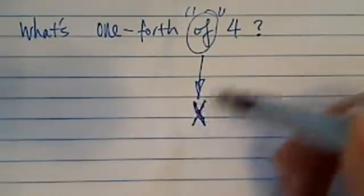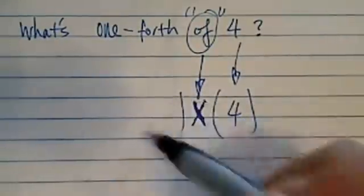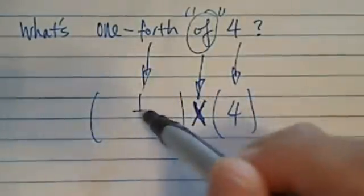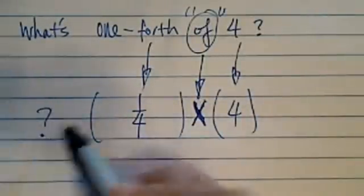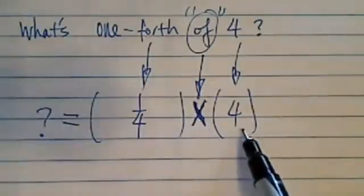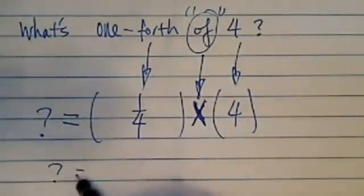So if we translate number by number, we have one-fourth. So question mark is equal to a quarter of four, which is one.